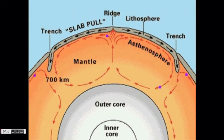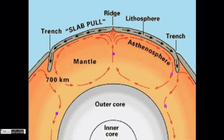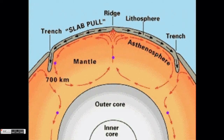This uneven heating causes convection cycles in the mantle. Magma heats up in the lower portion of the mantle, rises, and cools down at the top and sinks. These convection cycles are what pushes the tectonic plates around, since the tectonic plates are floating on top of these cycles.